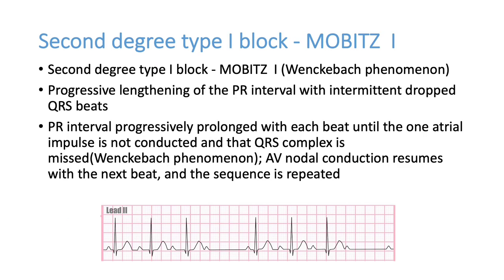Heart blocks are another cause of significant bradycardia. First degree heart block has a prolonged PR interval but no bradycardia. Second degree heart block has two types: Mobitz type 1 (Wenckebach phenomenon) — progressive prolongation of PR interval followed by a dropped QRS complex; and Mobitz type 2 — no prolongation of PR interval but sudden drop of a QRS complex.